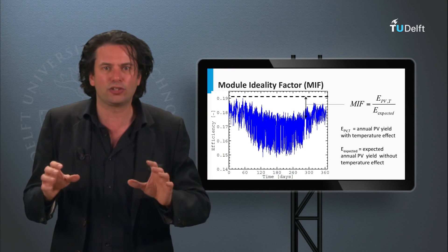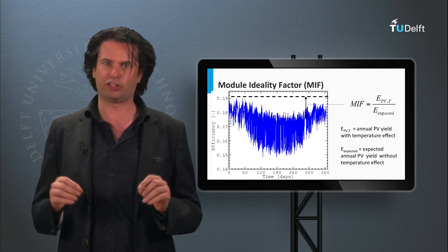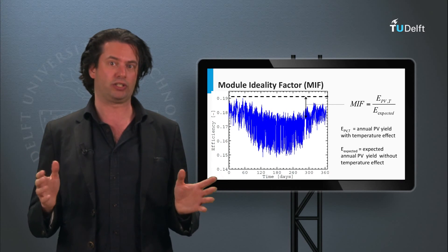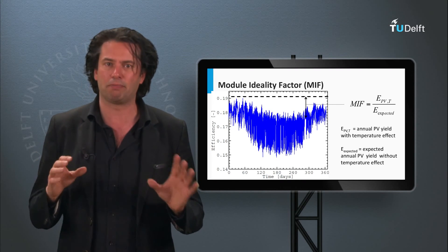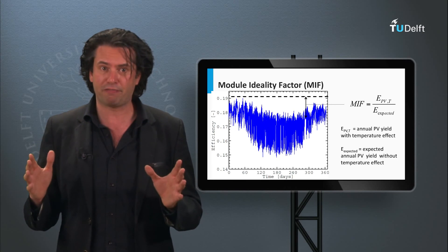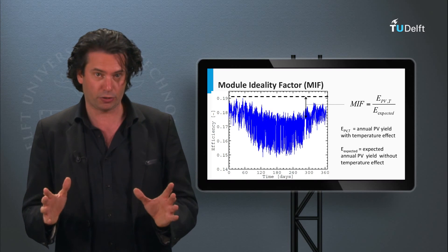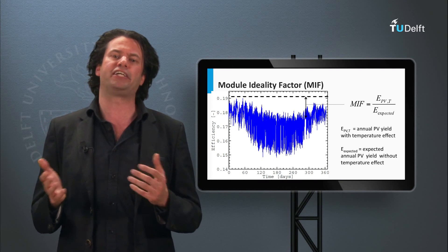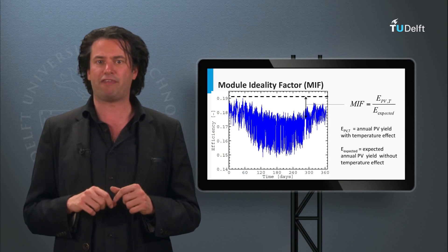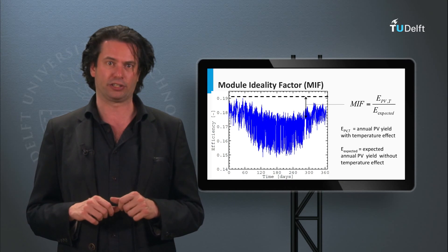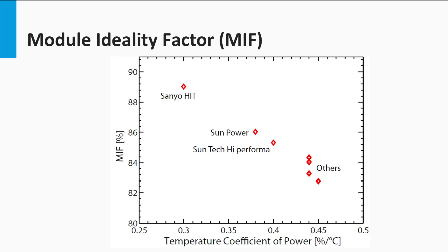Now, the extent to which the temperature impacts the module output is a function of the PV technology and the manufacturing process, which collectively decides the temperature coefficients of the PV module. The temperature effect is also a function of the ambient conditions. For the same technology there could be a deviation in the temperature coefficients due to the manufacturing processes and other design modifications. The following graph shows the spread of a few of the common silicon-based modules based on their module ideality factors and the temperature coefficient. These numbers have been calculated after modeling the temperature effects of these PV modules for the ambient conditions in the Netherlands in the year 2012.